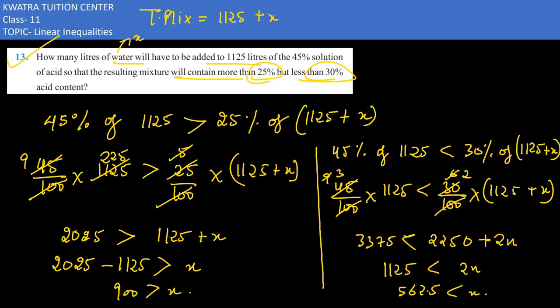What does x mean? Which value will x be between? It would be between 562.5 and 900. This means the amount of water to be added is more than 562.5 and less than 900 liters.